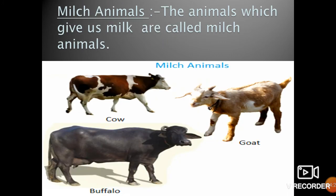The next is milk animals. The animals which give us milk are called milk animals. Some common examples are cow, buffalo, and goat. Children should drink milk daily. These types of animals live in a shade.